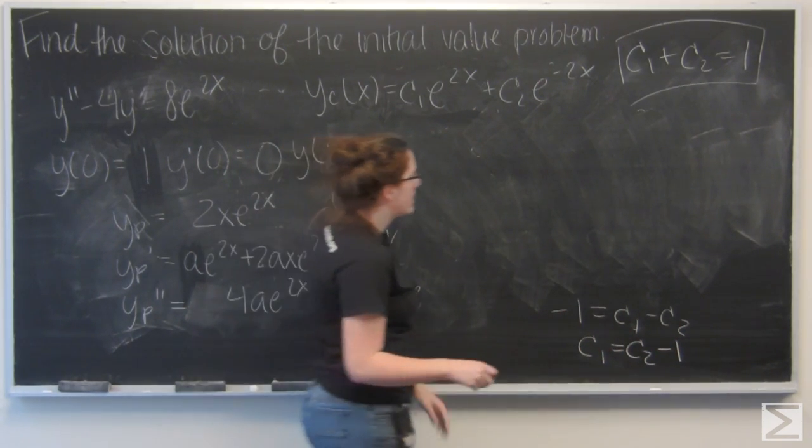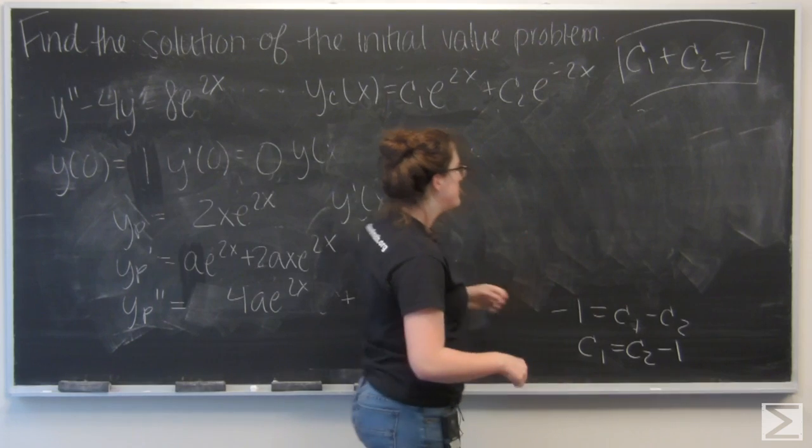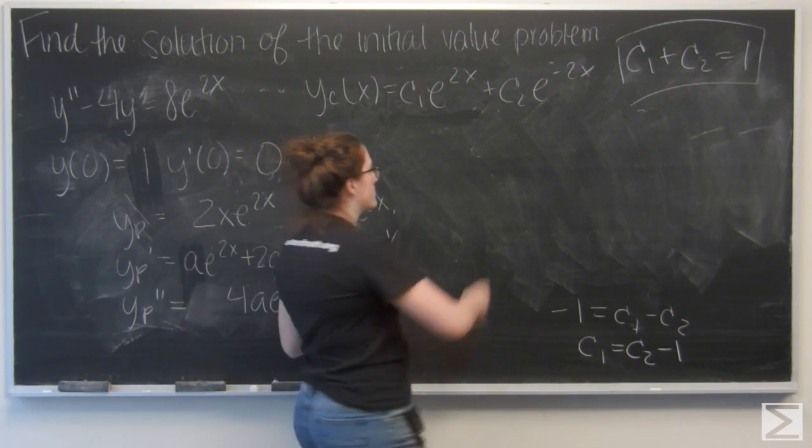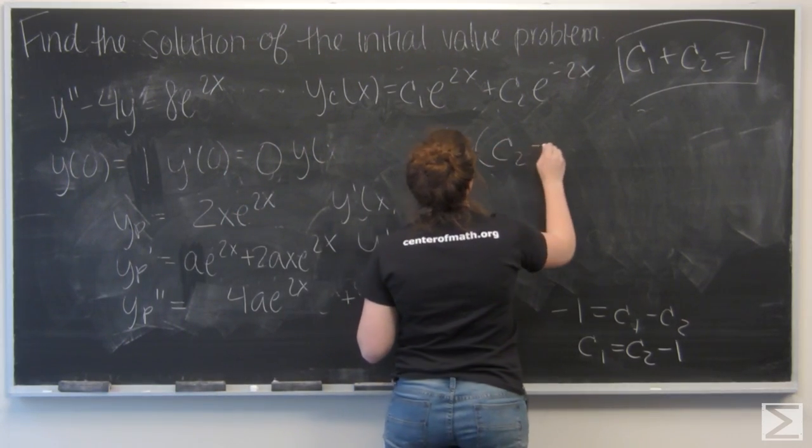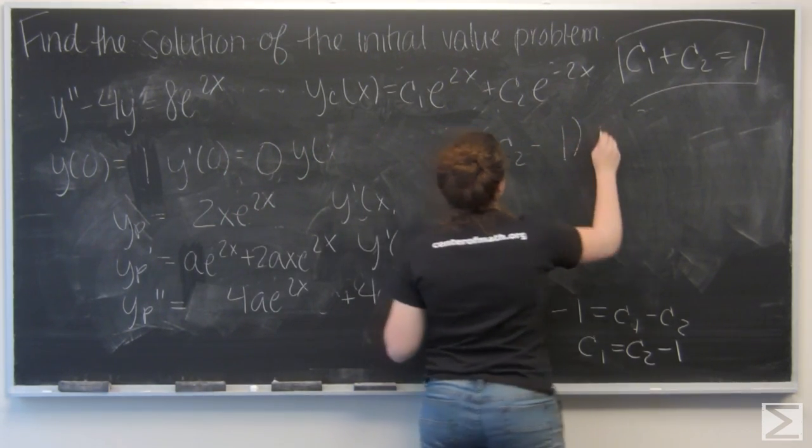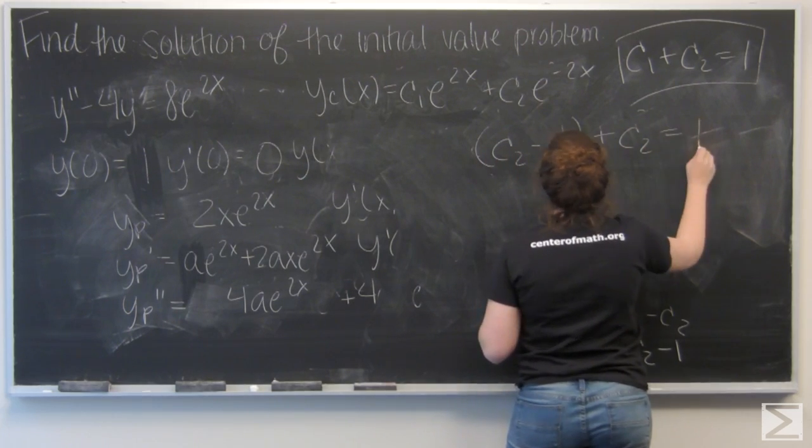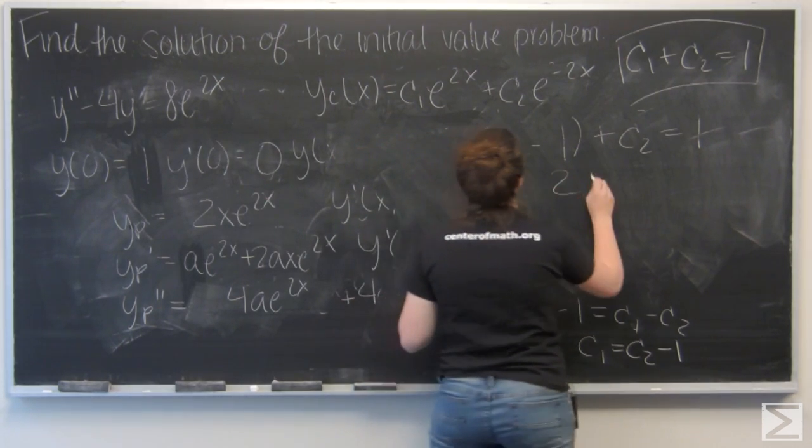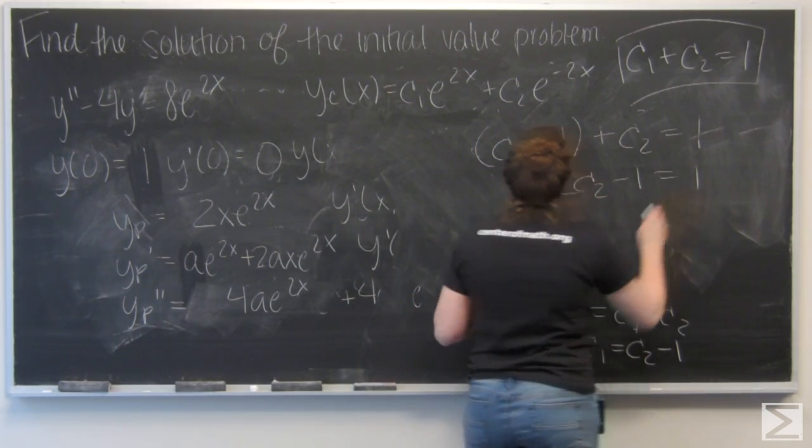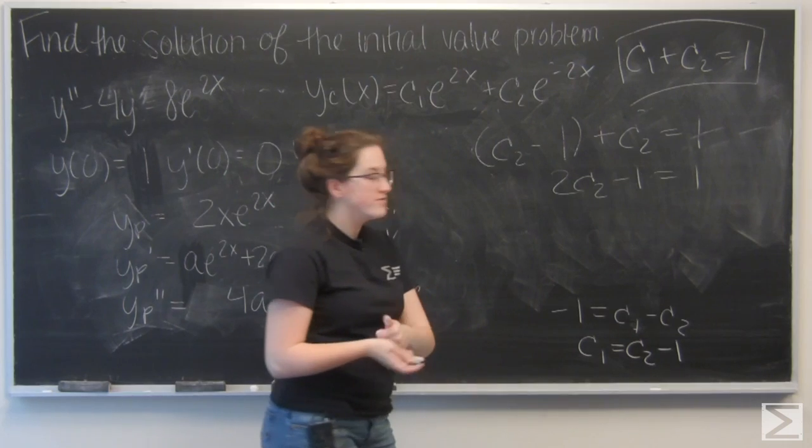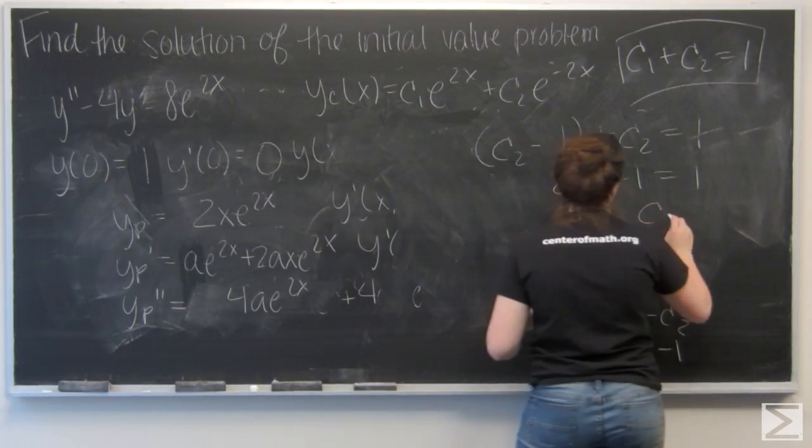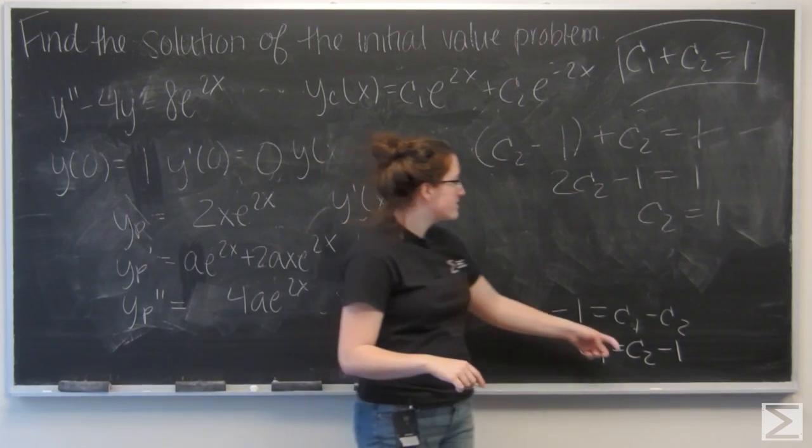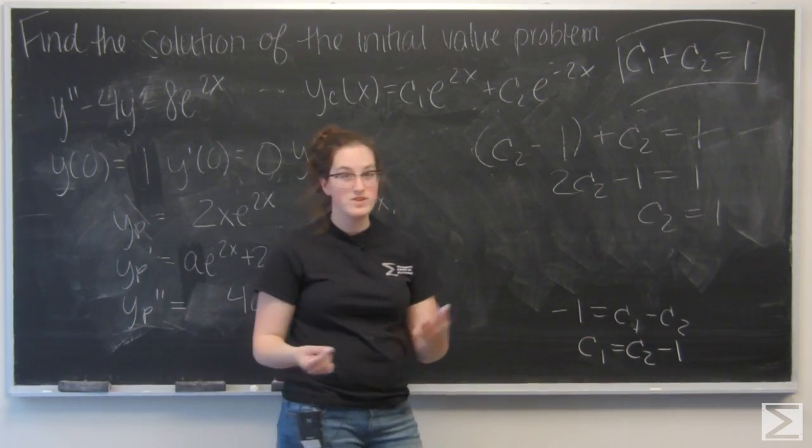Let's compare that with this. I'm going to go ahead and plug in c2 minus 1 for c1 in the top equation. I get 2c2 minus 1 equals 1, 2c2 equals 2, c2 equals 1. And I know that c1 equals c2 minus 1, and that means c1 just equals 0.